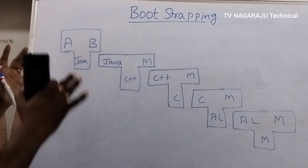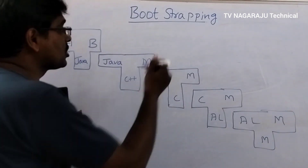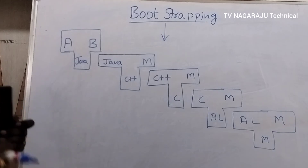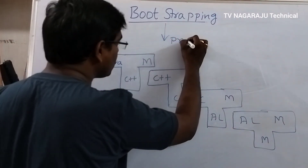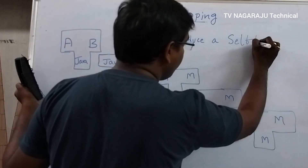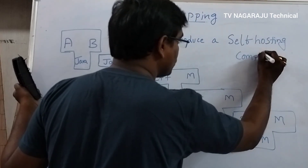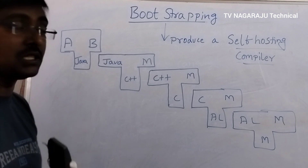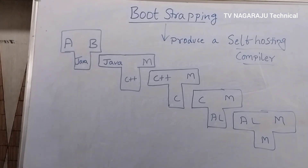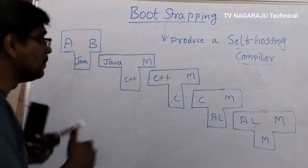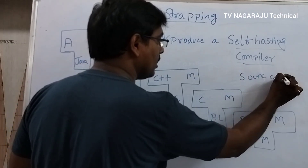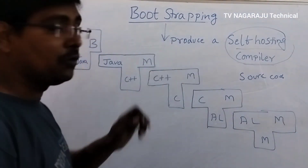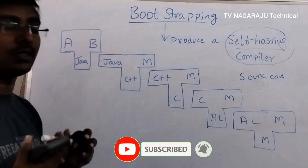This entire process is called bootstrapping. Bootstrapping is used to produce a self-hosting compiler. A self-hosting compiler is one that compiles its own source code — that is, by using itself. The type of self-hosting compiler is produced by bootstrapping. This is the concept of bootstrapping.